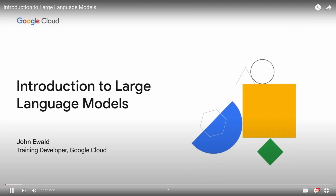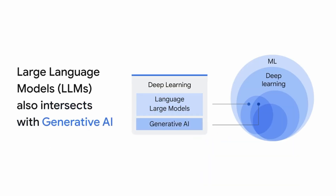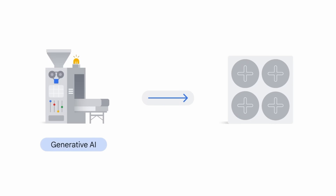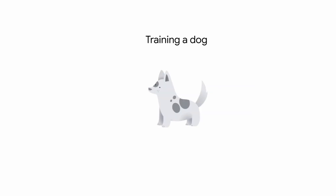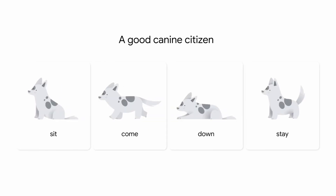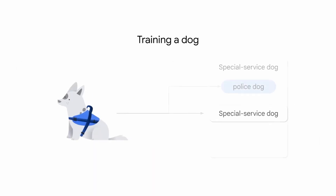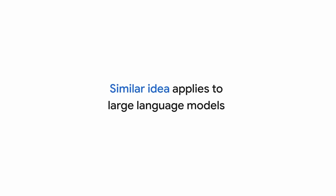Welcome to Introduction to Large Language Models. LLMs and generative AI intersect, and they are both a part of deep learning. Large language models refer to large, general-purpose language models that can be pre-trained and then fine-tuned for specific purposes. Imagine training a dog — you train it basic commands like sit, come, down, and stay. But if you need a special service dog, such as a police dog, a guide dog, or a hunting dog, you add special training. This same idea applies to large language models.